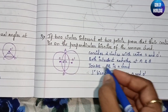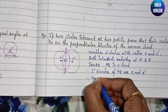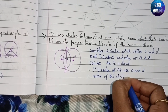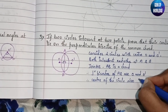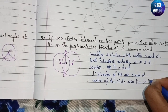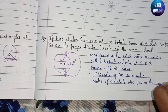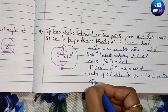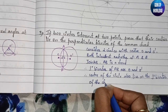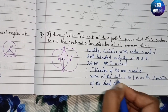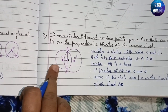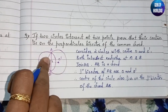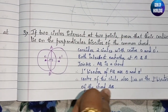Therefore, the centers of the circles also lie on the perpendicular bisector of the common chord AB. So we can say that center points O and O dash both lie on the perpendicular bisector of chord AB, which is what we needed to show.